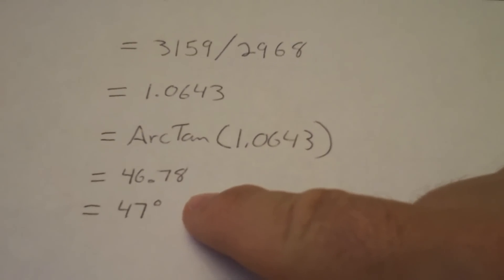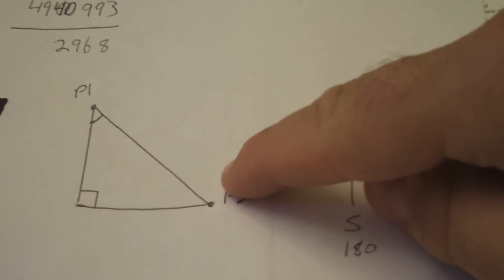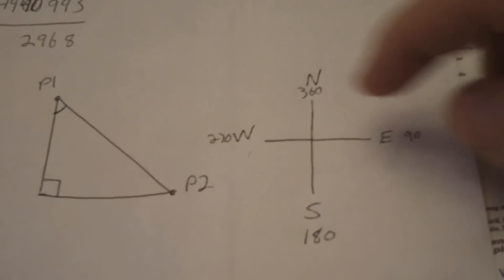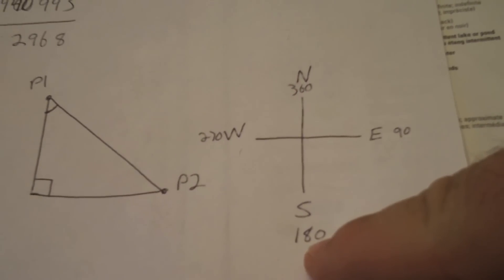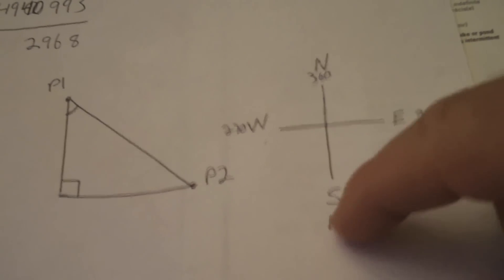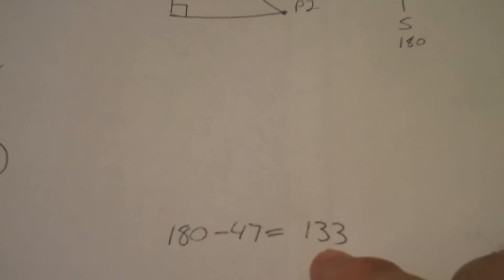Now, since our direction of travel is really, if you look down our map, it's kind of down in this quadrant here, we kind of have to take 180 and subtract 47 from our 180, so which is what we've done here. So we end up with 133 degrees. So let's verify this on the map.